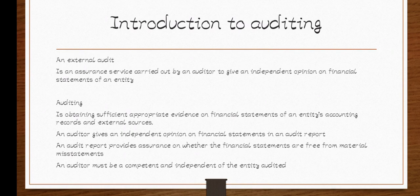Then we have auditing itself. Auditing is the process of obtaining sufficient appropriate evidence on financial statements of an entity's accounting records and external sources. It's all about getting enough evidence — sufficient appropriate evidence. Those three words are important and will be frequent throughout auditing, so you should get used to them.